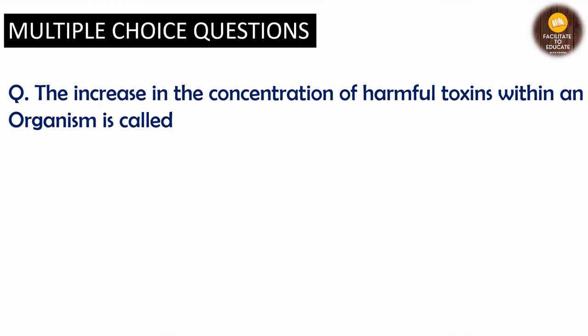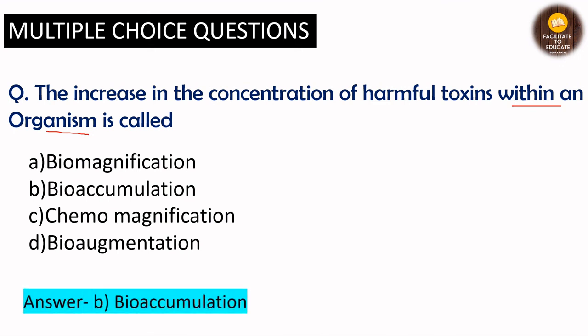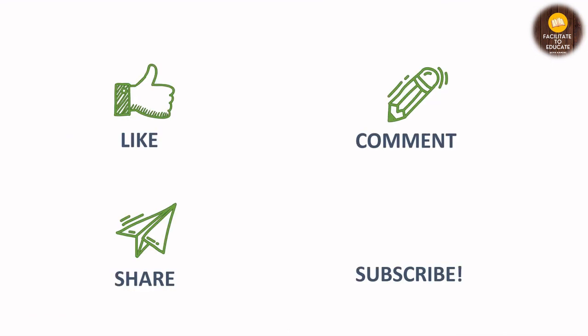The next question: the increase in concentration of harmful toxins within an organism is called what? Since it is within an organism, this is not biomagnification — it is bioaccumulation. The correct answer is option B — bioaccumulation. I hope you understood all the concepts in this video and the MCQs. If you have any doubts, ask in the comment section. Share this video, like it, and subscribe to my channel for more informative videos. Thank you so much.